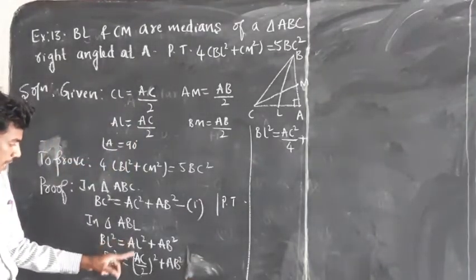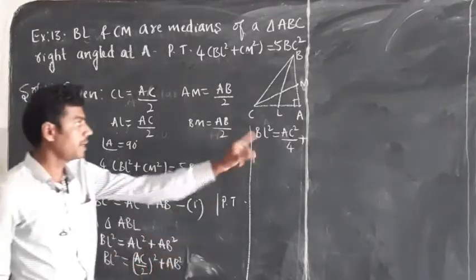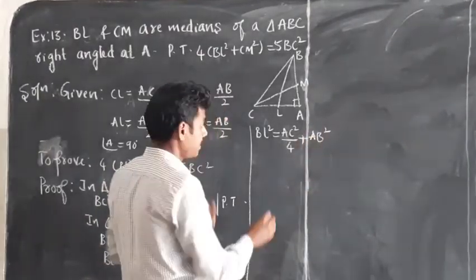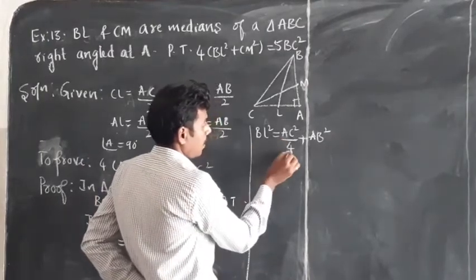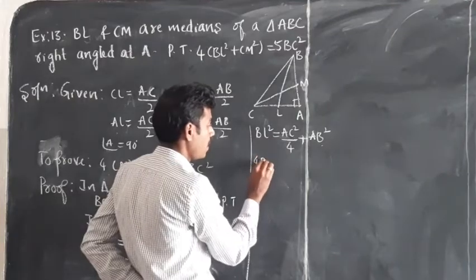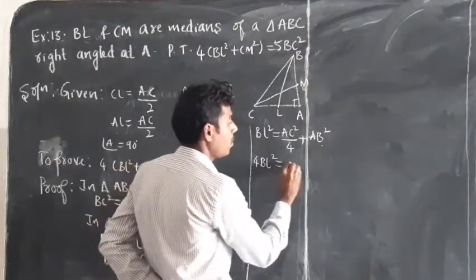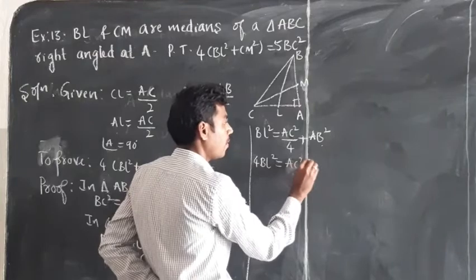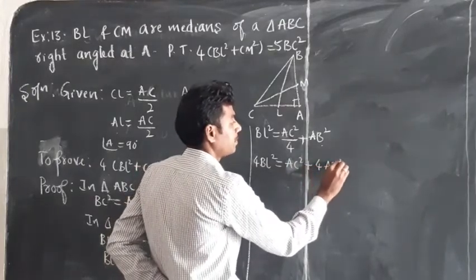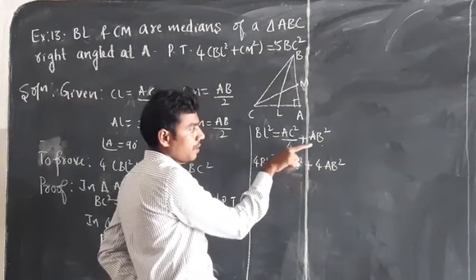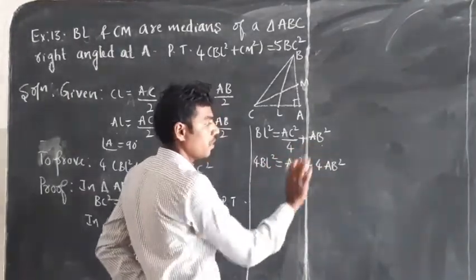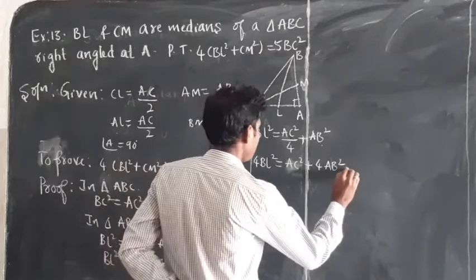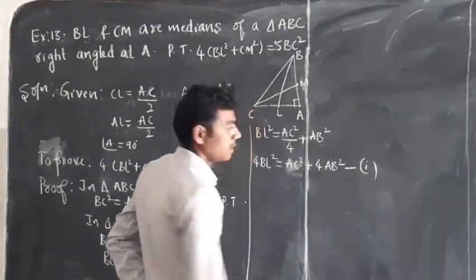Taking LCM of 4 on the right side and transferring to the left: 4BL square equals AC square plus 4AB square. We call this equation number 2.